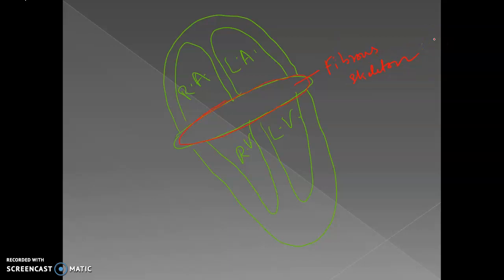The fibrous skeleton has multiple roles. The most important is that it insulates the atria from the ventricles — it provides electrical insulation between them. Apart from that, the fibrous skeleton also acts as an attachment site for cardiac muscles, and it holds the bicuspid and tricuspid valves, which are embedded in the fibrous skeleton.